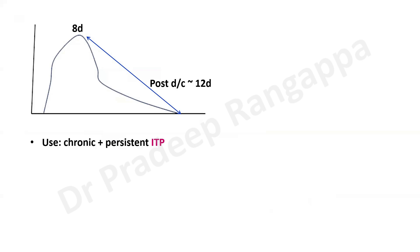The use of romiplostim and eltrombopag is predominantly studied in immune thrombocytopenic purpura (ITP), mainly chronic and persistent ITP which persists even after splenectomy, rituximab, or immunosuppressants, especially when there are bleeding manifestations. We are also seeing off-label usage in other indications where platelet count is low, which needs to be explored.